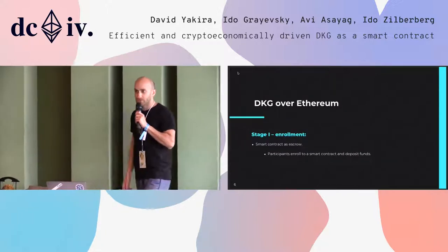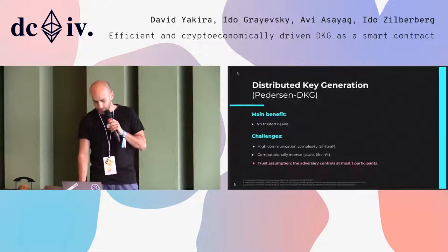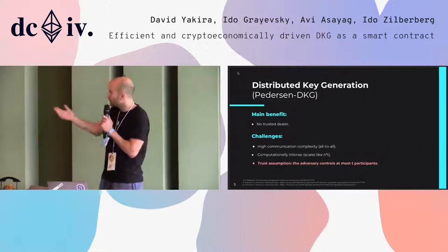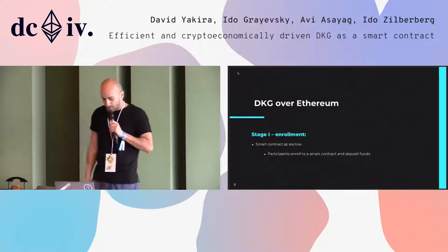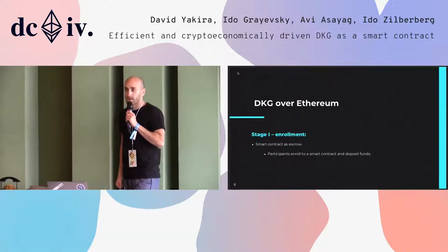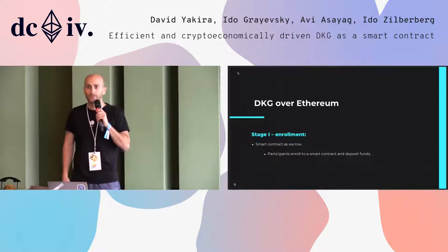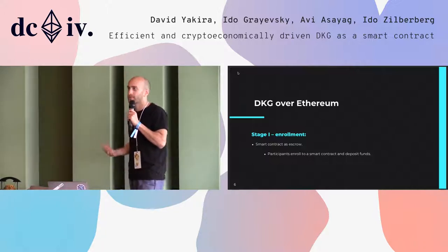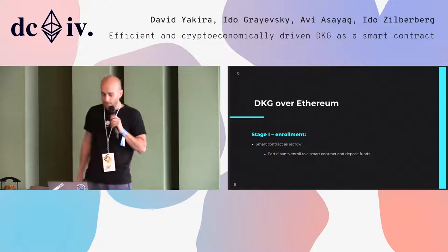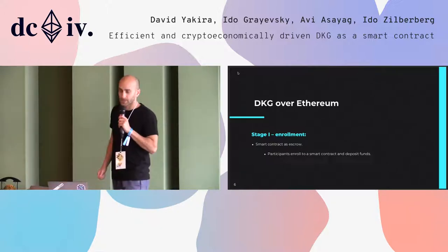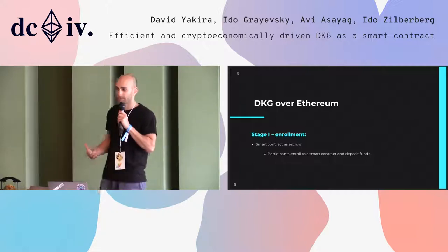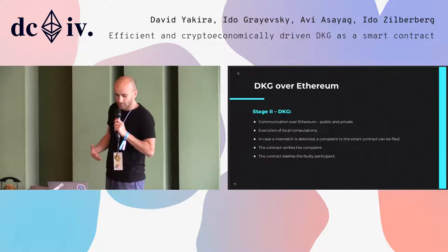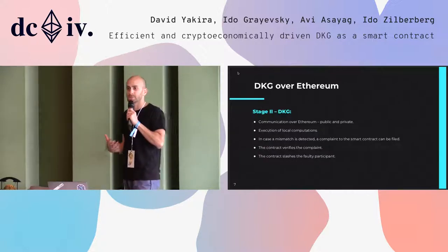So we're going to use Ethereum in order to relax this trust assumption — that's the main purpose of using Ethereum. It's going to be a smart contract that does the DKG. The participants are going to start by enrolling in the smart contract — they send a deposit and are then formally a part of this DKG. After enrollment is over, the actual DKG can start.